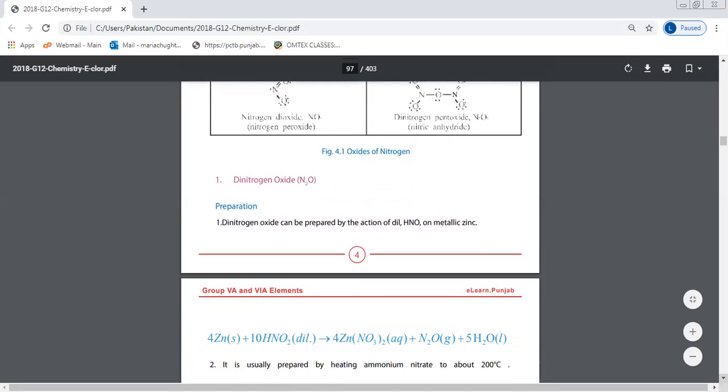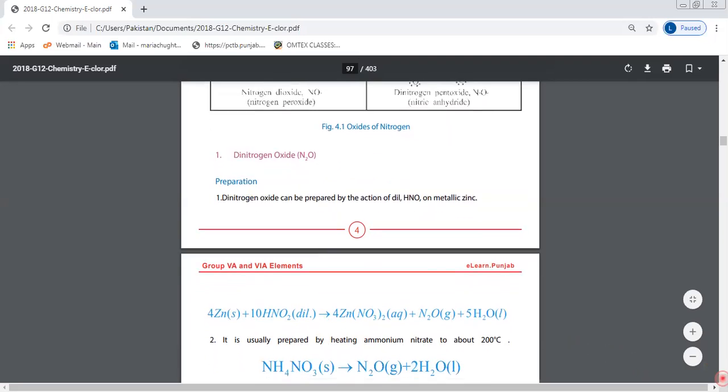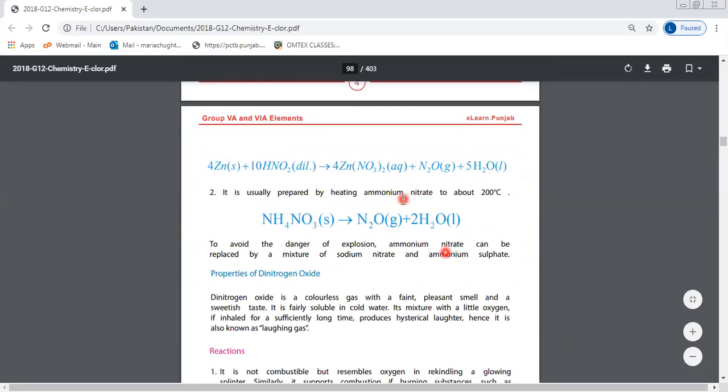Dinitrogen oxide, N₂O: Preparation. Dinitrogen oxide, which we call laughing gas, can be prepared by the action of dilute nitrous acid HNO₂ on metallic zinc: 4 zinc plus 10 HNO₂ dilute gives zinc nitrate, N₂O (laughing gas), and 5 water molecules. It is usually also prepared by heating ammonium nitrate to about 200 degrees Celsius. To avoid danger of explosion, ammonium nitrate can be replaced by a mixture of sodium nitrate and ammonium sulfide.